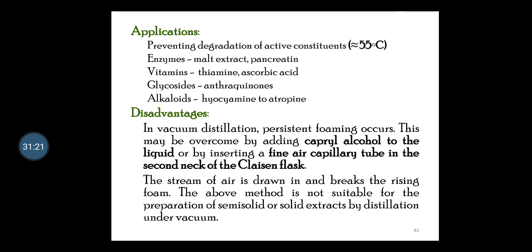Disadvantages of vacuum distillation: persistent foaming occurs under reduced pressure. This may be overcome by adding capillary alcohol to the liquid or by inserting a fine air capillary tube in the second neck of the Claisen flask, allowing a stream of air to be drawn in and break the rising foam. The method is not suitable for the preparation of semi-solid or solid extracts by distillation under vacuum.